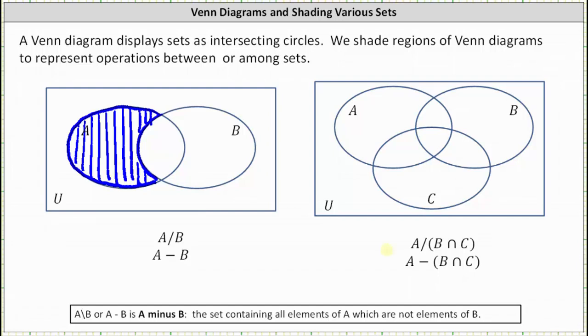For the second example, we have A minus the intersection of B and C. We want to shade the region that represents the set of elements that are in A which are not in B and C, or not in B intersect C.